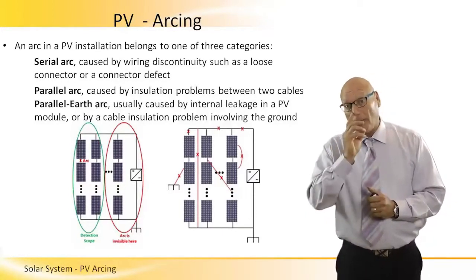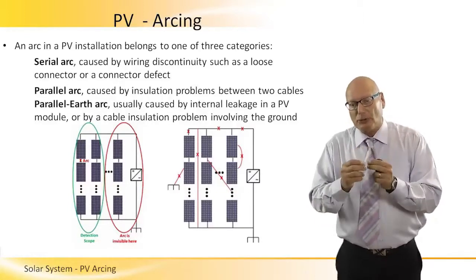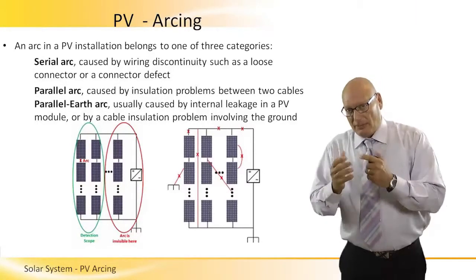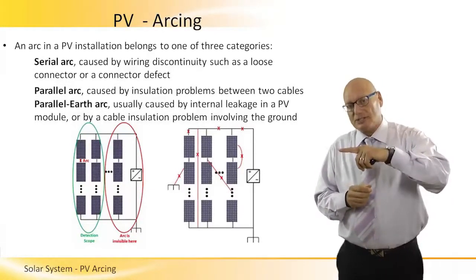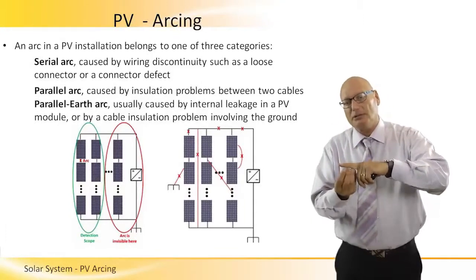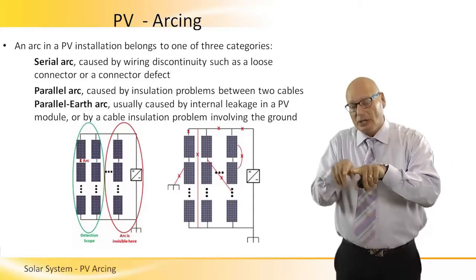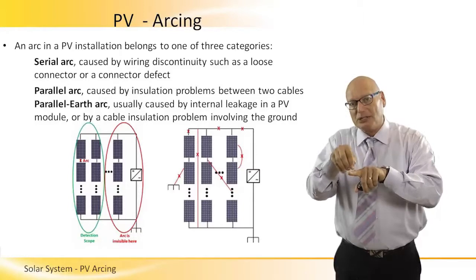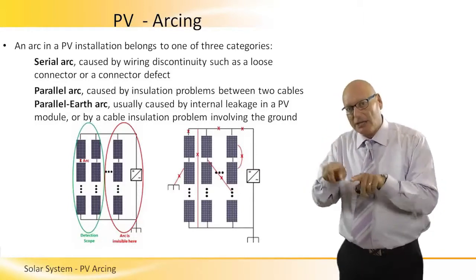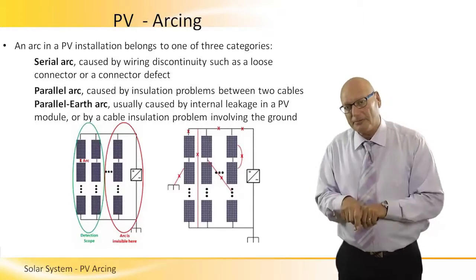The second is a parallel arc, caused by insulation problems between two adjacent cables. A cable exposed to the sun has the top part degraded while the bottom is not. If two adjacent cables have cracks on the top part of the insulation, arcing can occur between them.